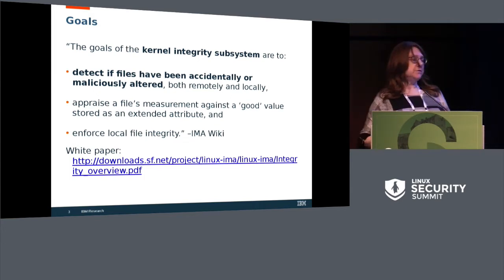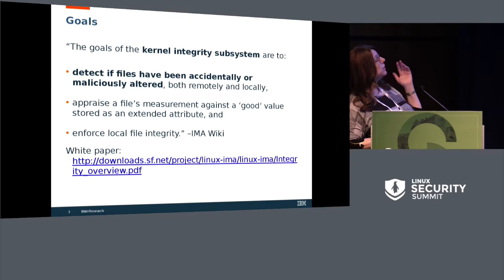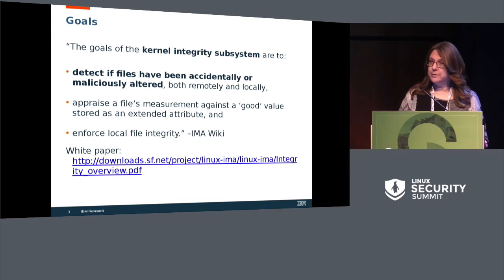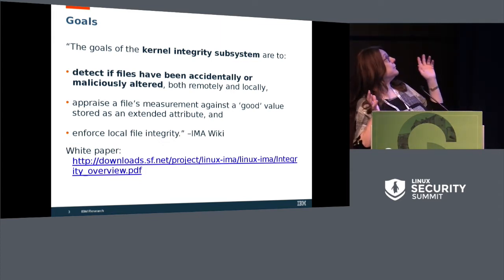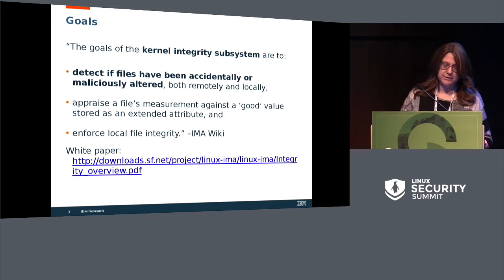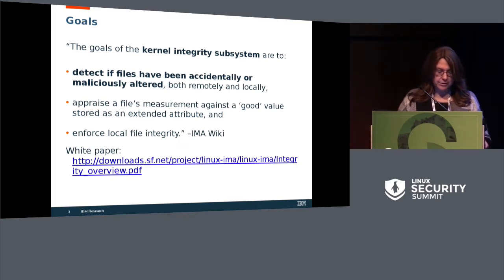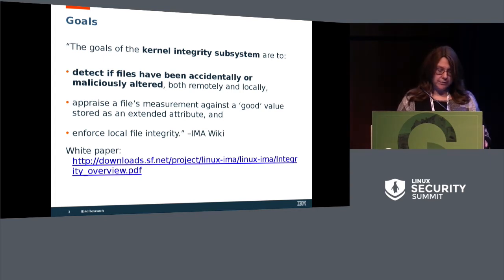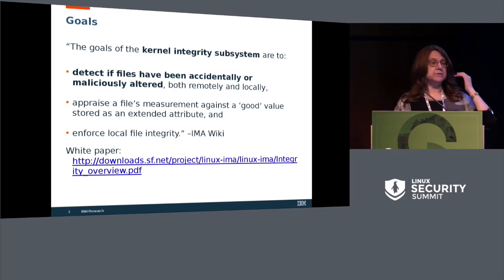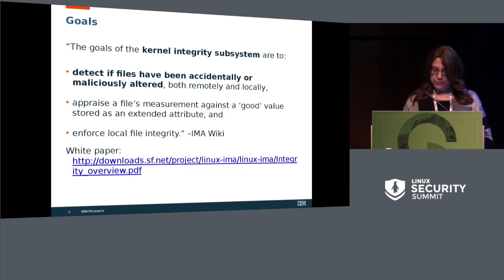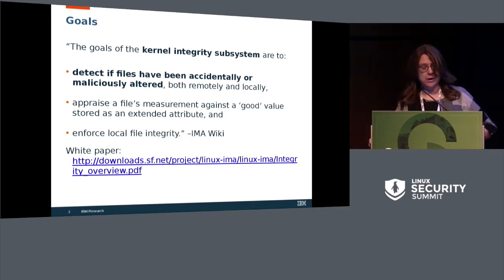The goals of the integrity subsystem really have not changed. This is straight from the wiki, and I believe Dave helped define what the goals of the subsystem are. The goals are to detect if files have been accidentally or maliciously altered, both remotely and locally; to appraise a file's measurement against a good value stored as an extended attribute; and to enforce local file integrity. There's a white paper from Dave with the URL at the bottom.